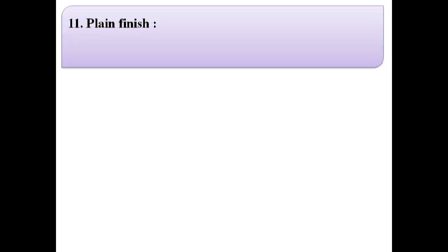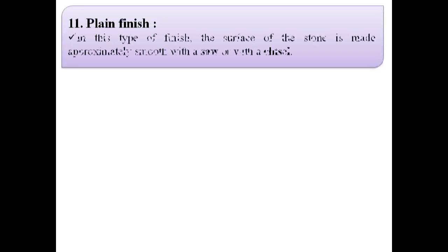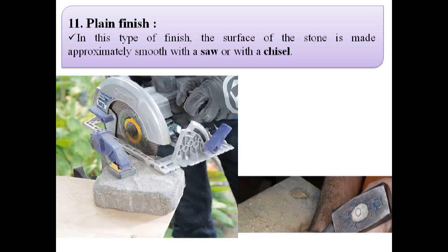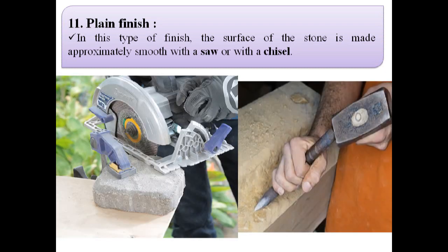The next finish is plain finish. In this type of finish, the surface of the stone is made approximately smooth with a saw or chisel. The first image shows plain finish by using a saw, and the second image shows plain finish by using a chisel.